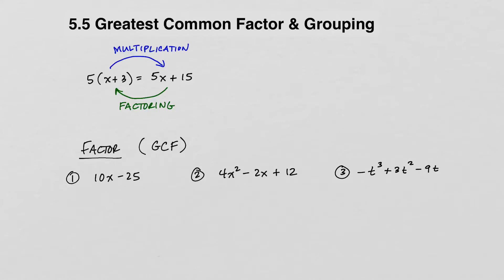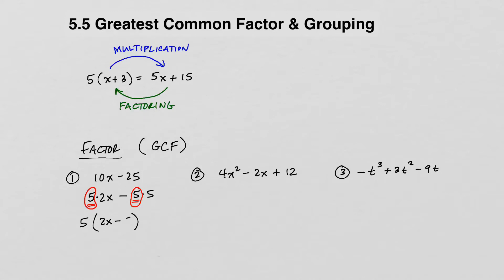In number 1, we would like to factor 10x minus 25. We need to identify the greatest common factor between 10 and 25, which is 5. We can express 10x as 5 times 2x, and 25 as 5 times 5. The greatest common factor is 5, and that can be factored out. Pulling the common factor of 5 out of the parentheses, we have 5 times the quantity 2x minus 5. This is literally just the reverse of the distributive property.